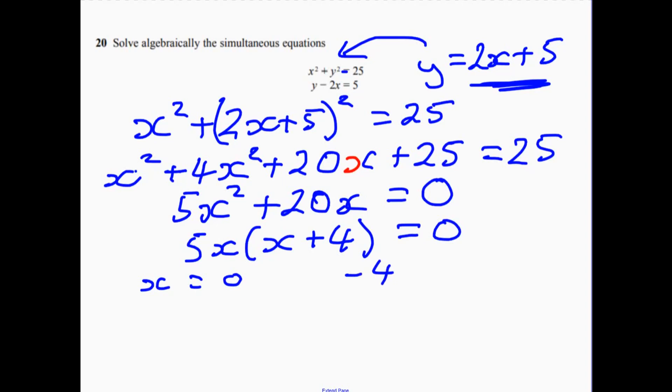What you need to do now is you need to take these values, you need to find out the corresponding y values. So you've actually got two possible solutions, haven't we? So we've got x equals minus 4, x equals 0. Now the easiest thing to do is just to go and pop those up into this one up here.